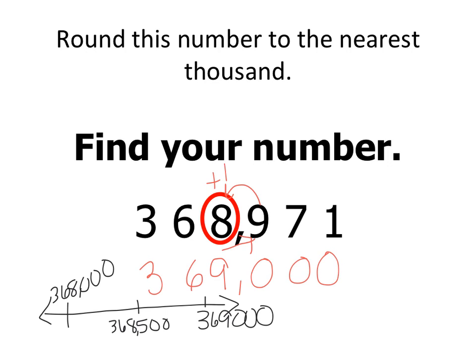368,971 would obviously fall greater than 368,500, making it closer to 369,000. And that's why my poem tells me if the number next door is 5 or more, to add one more, because it raises that number to the next spot on the number line when I'm rounding.